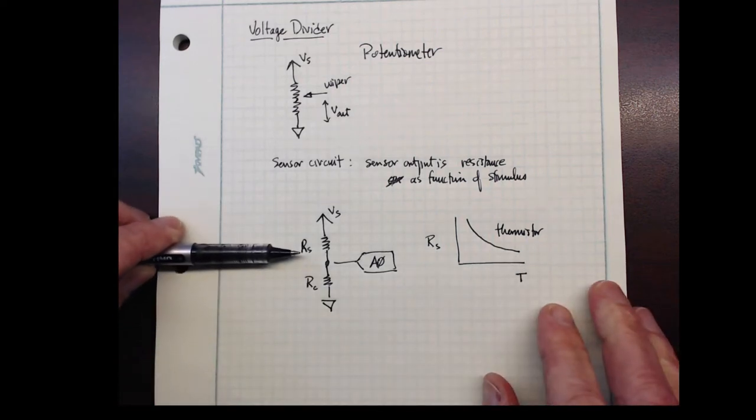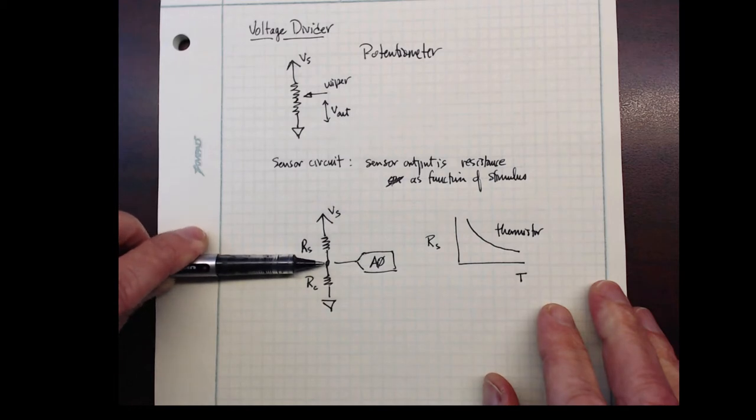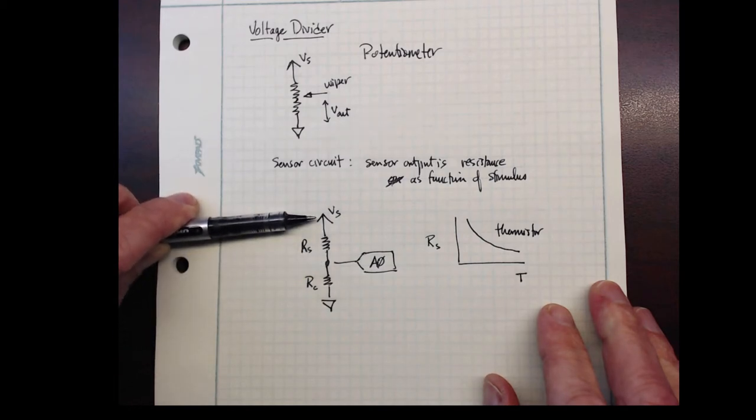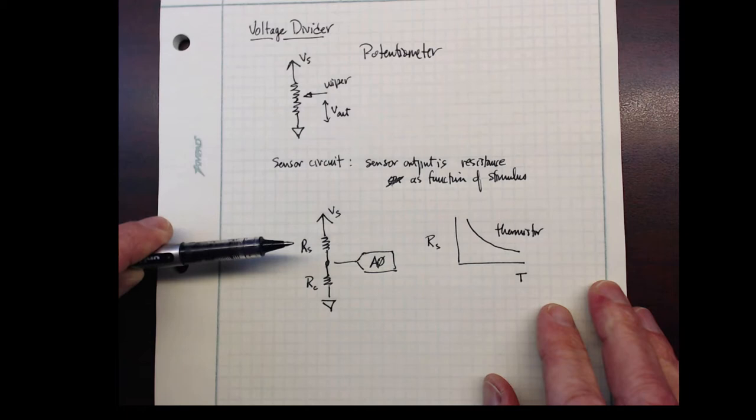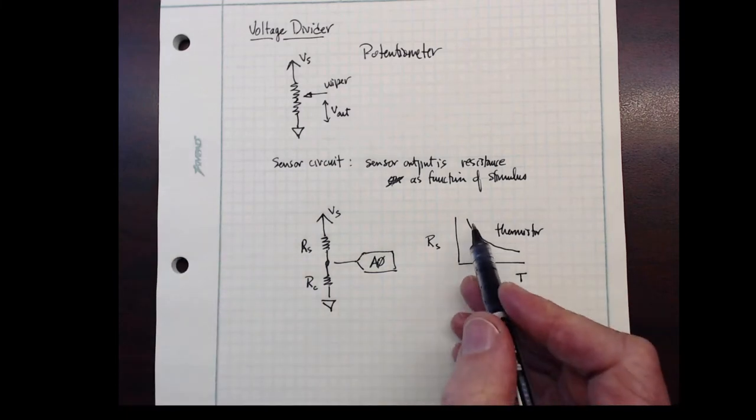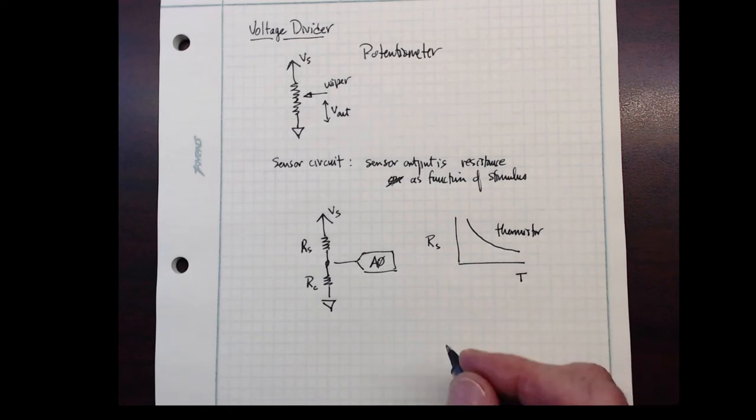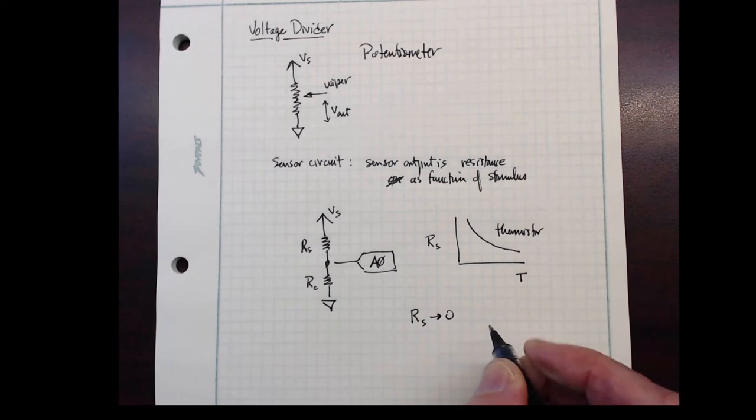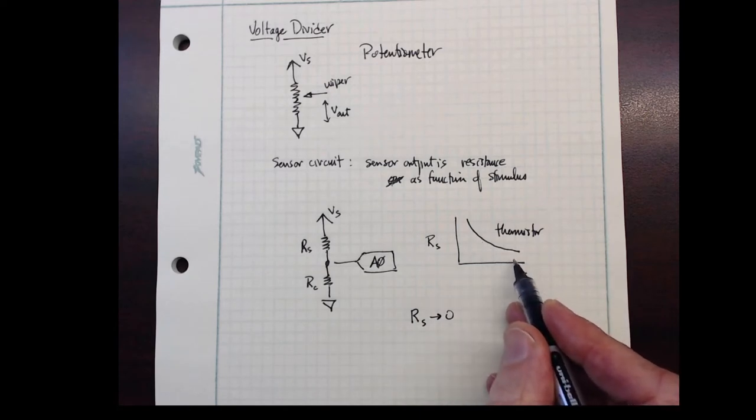Well, as the resistance decreases, the voltage at this point gets closer to Vs. So we use this configuration when the sensor stimulus changes the resistance in a negative way. So RS going to zero, that is, we decrease the resistance.